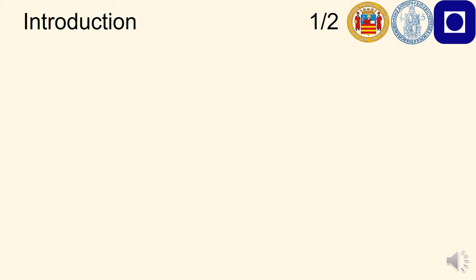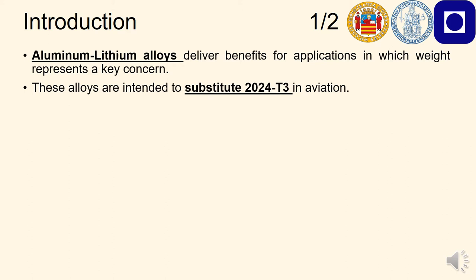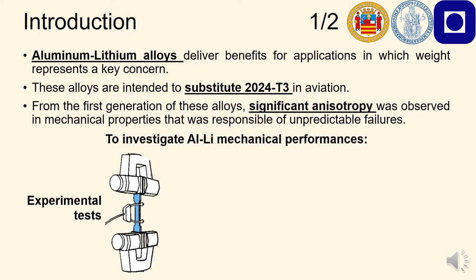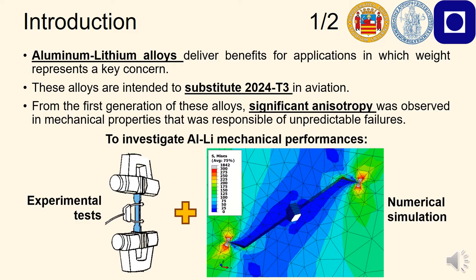Researchers started to study aluminum lithium alloys nearly 15 years ago as a possible way to reduce the weight of structures, especially within the aerospace environment. These alloys can be considered as a way to substitute more traditional aluminum alloys such as 2024-T3. These new aluminum alloys demonstrated an anisotropic mechanical behavior, especially with reference to their first generation alloys. In this work we intended to investigate these aspects through the typical combination of experimental tests aimed at investigating the performances of the material and numerical simulations to better comprehend the causes of the failures and to build up models for design purposes.